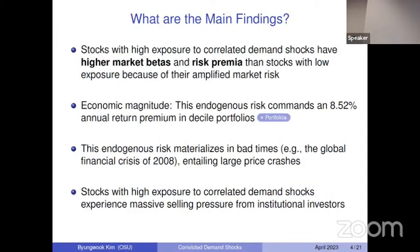Because the direction of stock trading coincides with the direction of stock market movements, the resulting correlated trades from these investors amplify stocks' market exposures. Stocks with high exposure to these demand shocks earn a premium because of the amplification of market risk. Sorting portfolios based on differential exposure to demand shocks reveals an annual return premium of about 8.5%, and this risk materializes during bad times such as the global financial crisis of 2008.